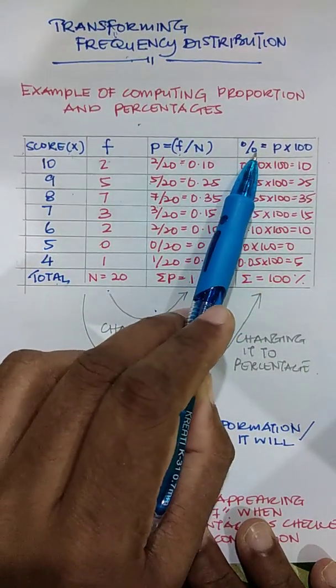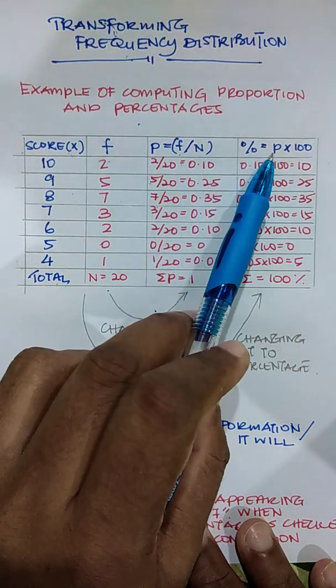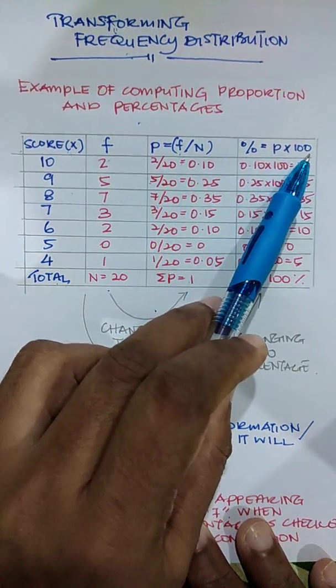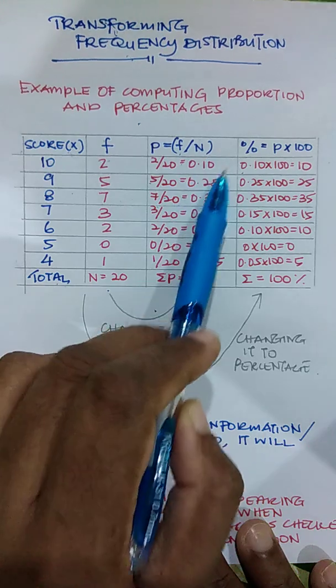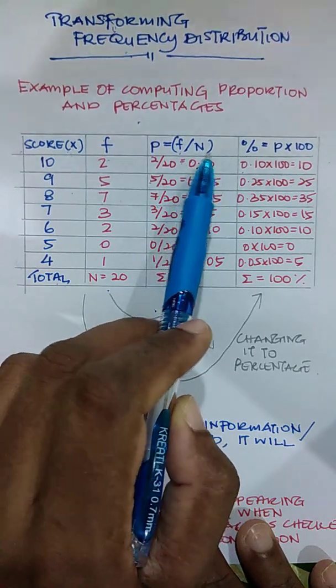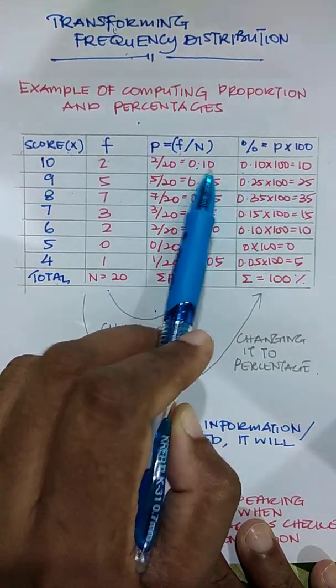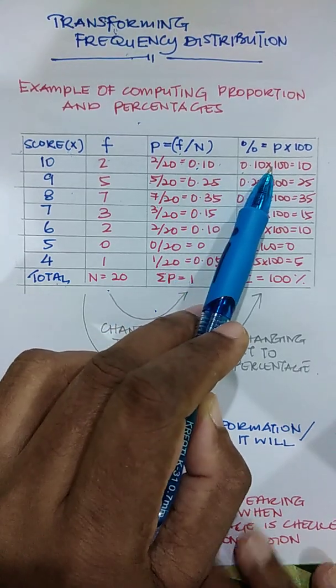So how do we get the percentage? It is the proportion multiplied by 100. So we already calculated the proportion here, right? So we can convert it to percentage. We are multiplying with 100.